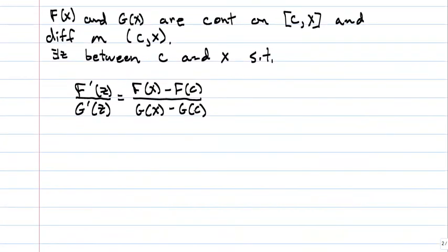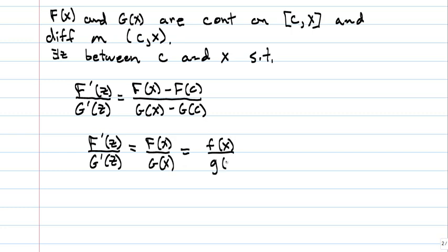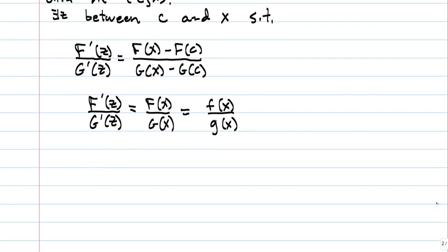Now, we know that big F of C and big G of C are both zero. So really, now, what we have, we could rewrite this as big F of X over big G of X. Now, we also know that big F of X and little f of X are the same as long as X does not equal zero. So really, what we have here is this. Furthermore, big F prime of Z would be the same as little f prime of Z. Big G prime of Z is the same as little g prime of Z. So now, here's what we have.